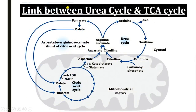Now we will see how the urea cycle is linked with the TCA cycle. At the end of step 4, argininosuccinate splits into arginine and fumarate, and this fumarate is channeled to the TCA cycle, where it gets converted into malate and then oxaloacetate. By this process, the urea cycle and the TCA cycle are linked together, which is why the urea cycle is sometimes also known as the urea bicycle.